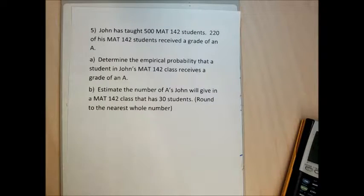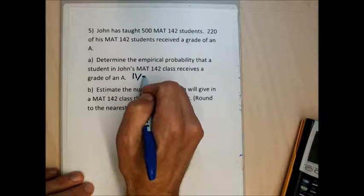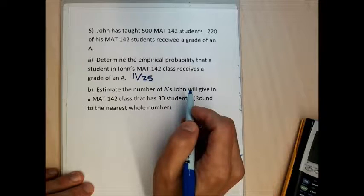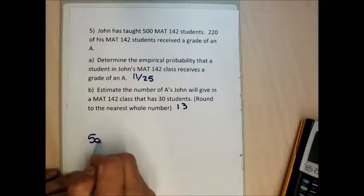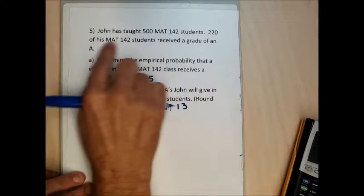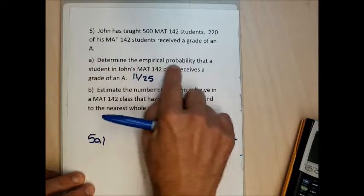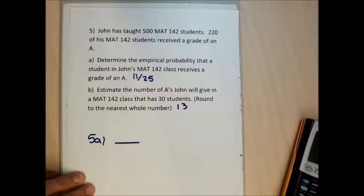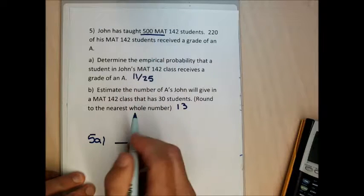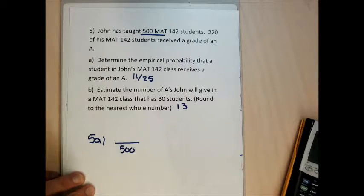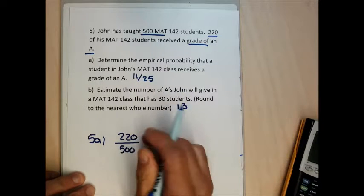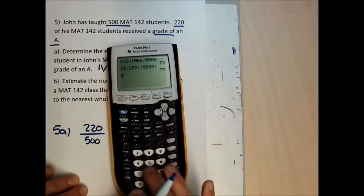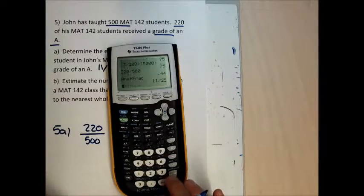Let me do problem 5. John has taught 500 math 142 students; 220 received a grade of A. Determine the empirical probability that a student in John's math 142 class receives an A. I form a fraction: 220 in the numerator (students receiving A), 500 in the denominator (total students). That reduces to 11 over 25. For part B, estimate the number of A's in a class of 30: 11/25 times 30 equals 13.2, which rounds to 13.